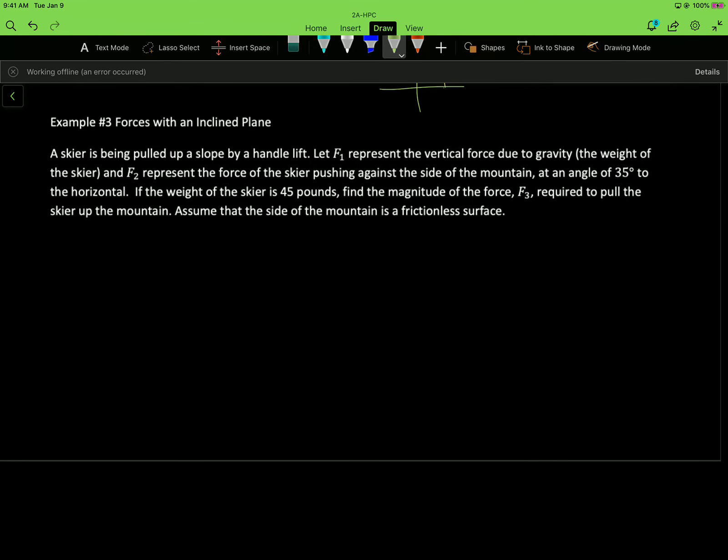Let's look at our last example. This is about forces with inclined planes. So there's a skier being pulled up a slope. So here's the skier. And they're holding on to that lift. F sub 1, so that force will be the vertical force due to gravity, which is really the weight of the skier. So we'll draw that down this way. That's F sub 1. And then F sub 2 represents the force of the skier pushing against the side of the mountain. So that force 2 is going to be always drawn perpendicular to the slope. That's our force 2. That's kind of the skier pushing off the hill and the hill or the slope pushing back.